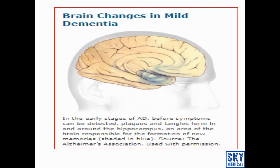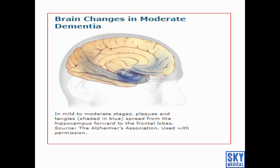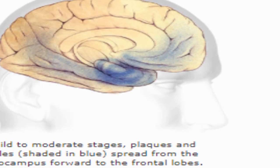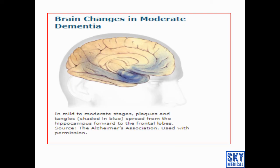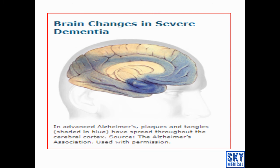Regarding changes in the brain: in the earliest and mildest form, patients may show symptoms of stress or a confused state. The first area affected is the hippocampus. In moderate conditions, plaques and tangles spread from the hippocampus forward to the frontal lobe. In severe conditions, plaques and tangles aggregate and spread throughout the entire cerebral cortex, at which point all symptoms are dominant.